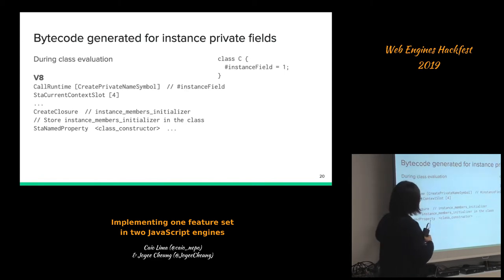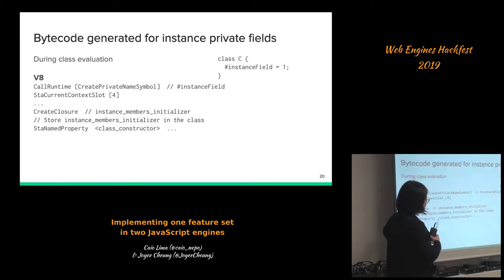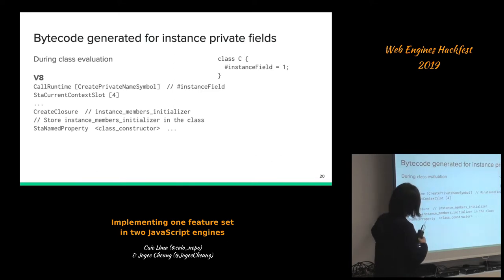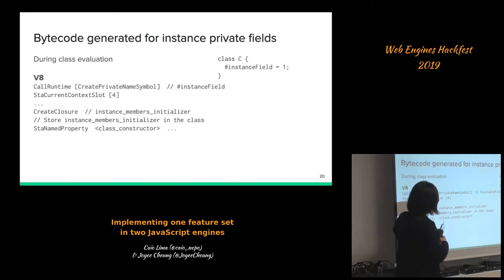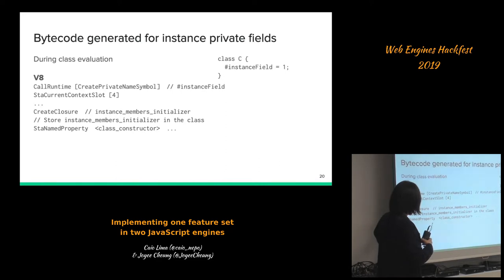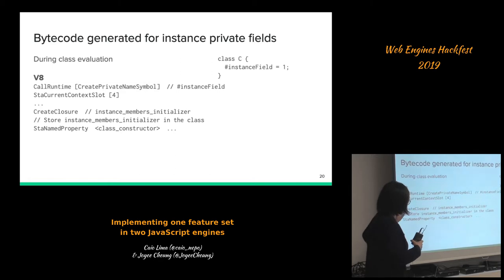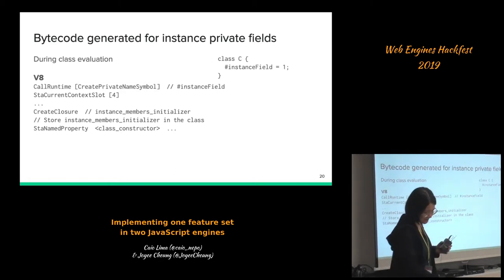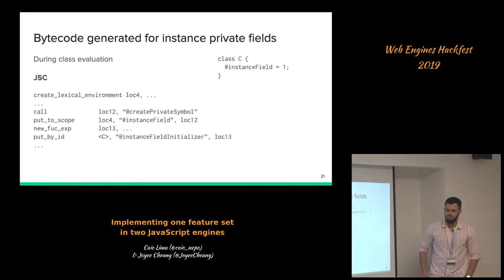We then need to create a closure — in V8 bytecode this is basically a function — to initialize the field, which we will invoke later during instance construction. We then store this initializer onto the class using a special symbol.